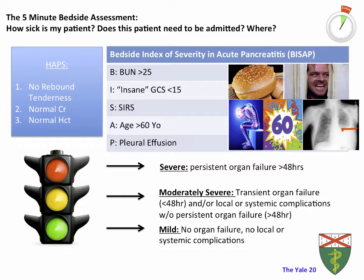Once we've calculated the BICEP score, we assess what it tells us clinically. A BICEP score of 0 to 2 is associated with low mortality on this hospitalization — less than 2% likelihood of death. A BICEP score of 3 to 5 is associated with higher mortality, translating to about 15%. Using several modalities, we then decide whether the patient will need to be admitted to a general medicine floor or to the ICU. Triage of a patient with acute pancreatitis depends on the severity of the pancreatitis.